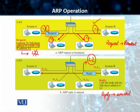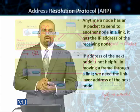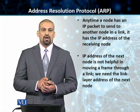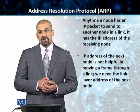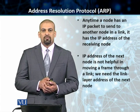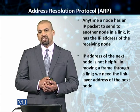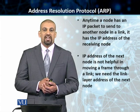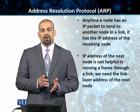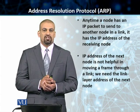System A can then use L2 to send its frames or whatever information it has to system B. This is how the address resolution protocol — the ARP request and the ARP reply — works. There is an additional concept called caching that is also related to ARP, and we'll talk about that before we conclude this discussion.